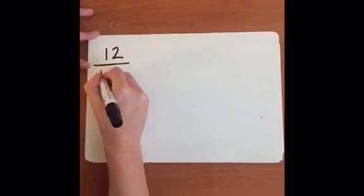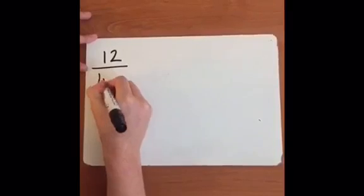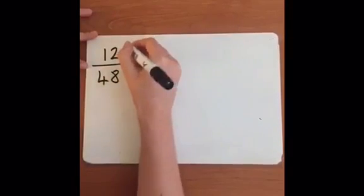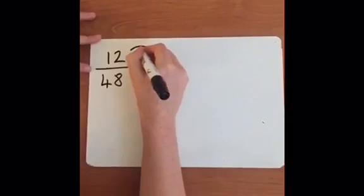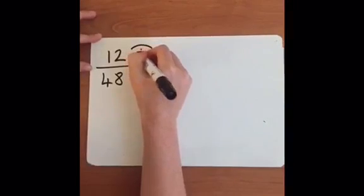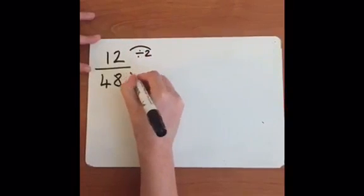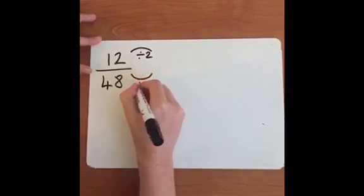Okay, so now we're going to go back to our original fraction of 12/48, and we're going to simplify it using Method 2. Now this is possible because both the numerator and the denominator are even. So what we're going to do is we're going to take them both and divide them by 2, or half them.